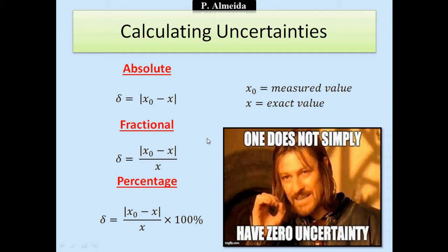Finally, you're going to calculate the percentage uncertainty. It's going to be the fractional uncertainty times 100 in percentage. So the module of the measured value minus the exact value, the range between the value that you measured and the real value or the mean, divided by the exact value, then multiply the whole thing by 100.